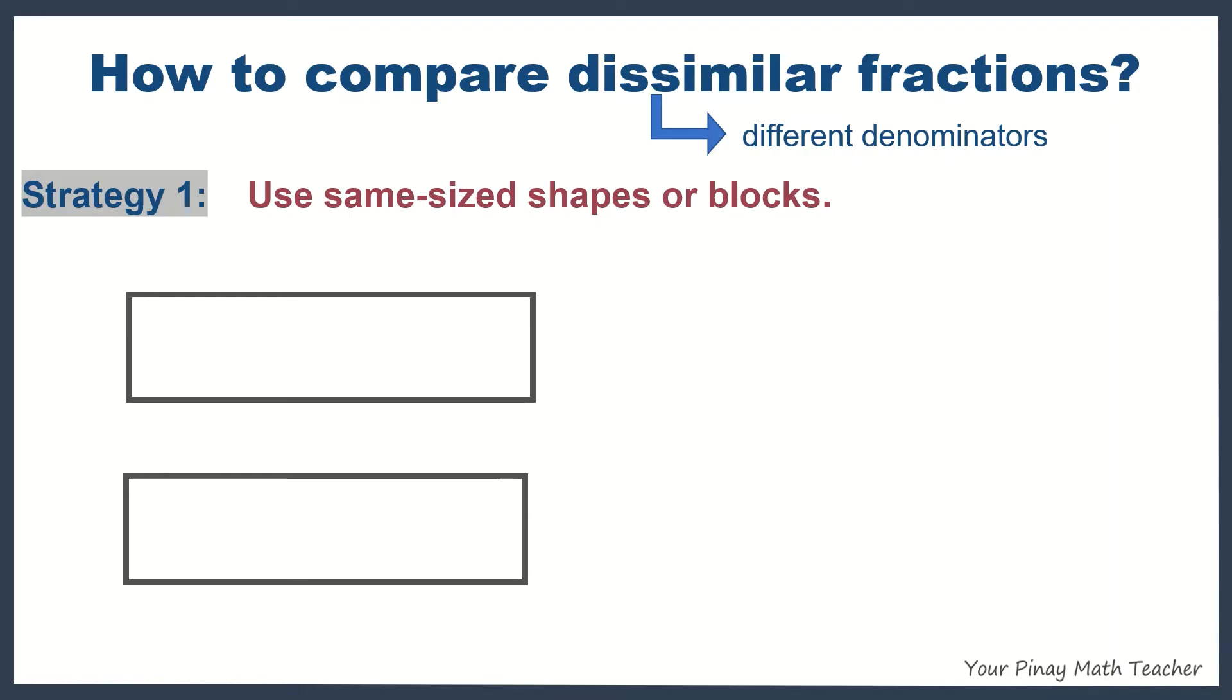For example, the first rectangle is divided into three equal parts and the second into two equal parts. Since they have different number of equal parts,